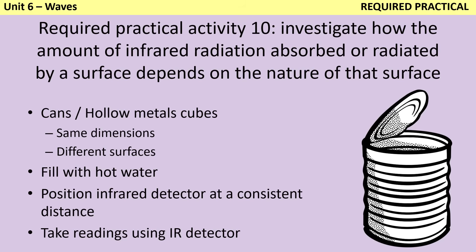The next required practical is about investigating how the amount of infrared radiation that's absorbed or radiated by a surface depends on the nature of that surface. That could be about the surface type, like is it shiny or matte or whether the color makes a difference. In order to test this, you need a number of identical cans or hollow metal cubes. They need to have the same dimensions but different surfaces, which is the independent variable.